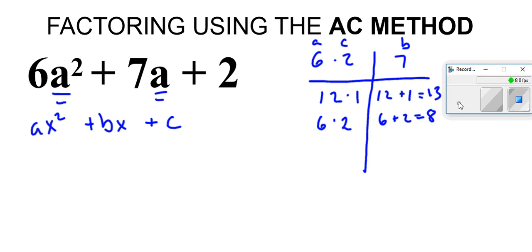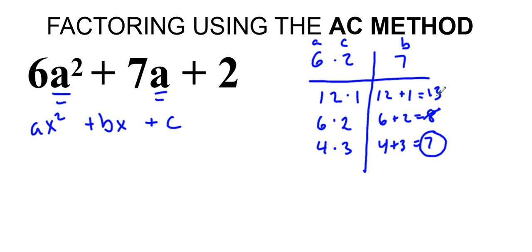And now what we have is, we figure another one out: 4 times 3. Well, 4 plus 3, hey, that equals 7. What do you know, that's what we're looking for. So these two don't work, but 4 and 3, yes, that equals 7, the b value, and that's what we're going to use.